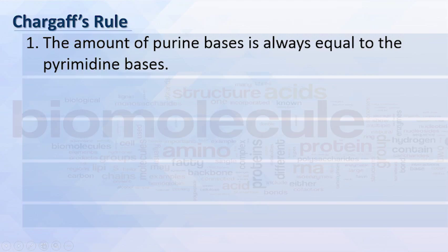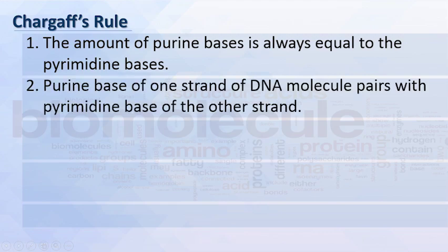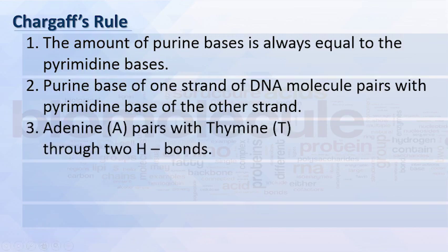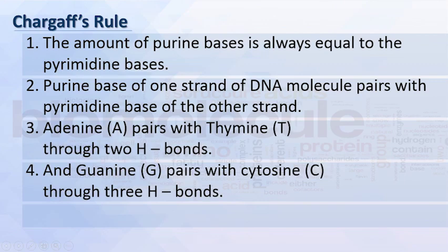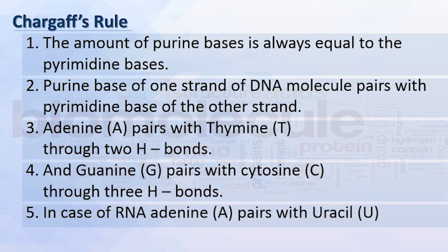Chargaff's rule: the amount of purine bases is always equal to pyrimidine bases. A purine base of one strand of a DNA molecule pairs with a pyrimidine base of the other strand. Adenine pairs with thymine through two hydrogen bonds, guanine pairs with cytosine through three hydrogen bonds. In the case of RNA, adenine pairs with uracil.